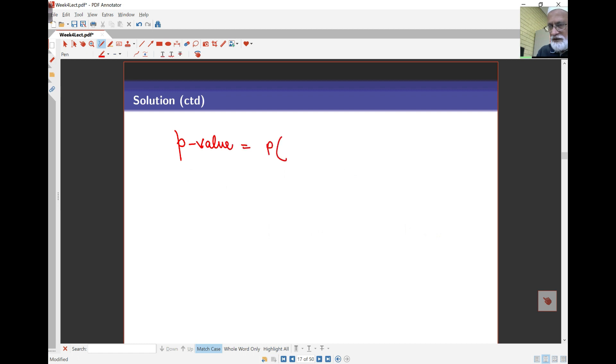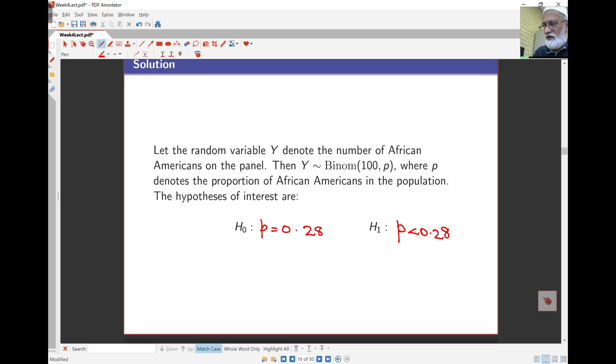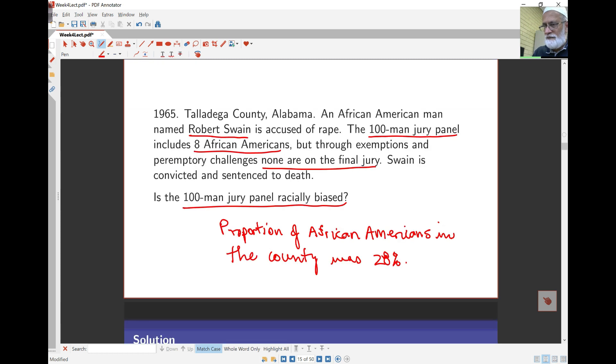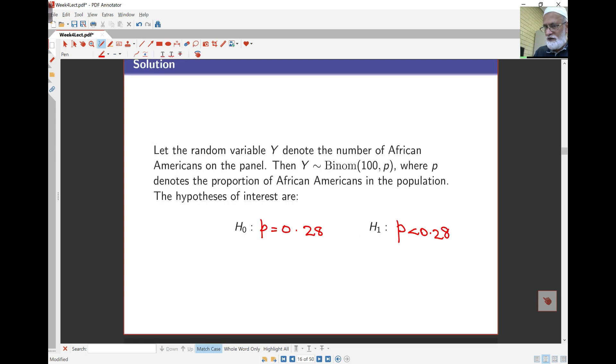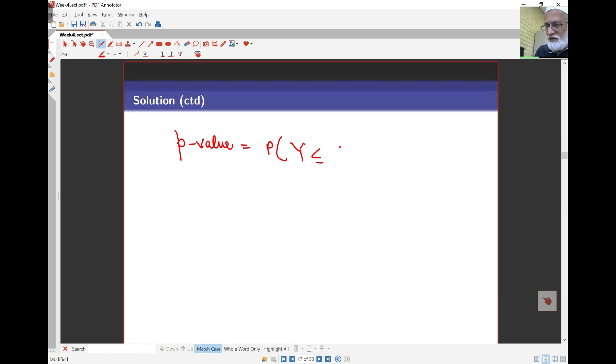Here then, our P-value is the probability that Y is less than or equal to—note that the direction is the same as the alternative hypothesis here. We had eight African-Americans on the panel, so the P-value is probability that Y ≤ 8, given the population proportion is actually 28%. This comes from R fairly easily using pbinom(8, 100, 0.28).